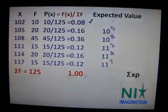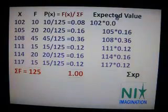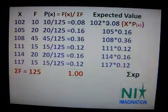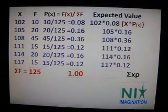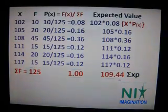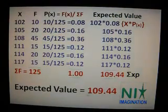What is the expected value? The expected value can be calculated as x multiplied by P. X is 102 multiplied by 0.08 as our expected value. The summation of this is 109.44. So our expected value is 109.44.